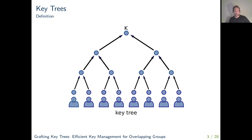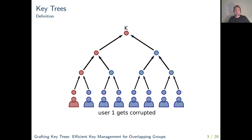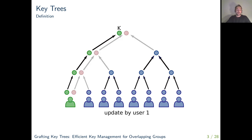The idea behind this construction is that edges mean that knowledge of the key of the node where the edge starts implies knowledge of the key of the other node. So we have the following key invariant: every user knows exactly the secret keys of nodes that lie on the path from their leaf to the root. The nice thing about this construction is that we are able to very cheaply update keys.